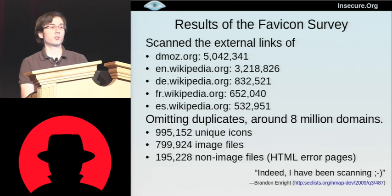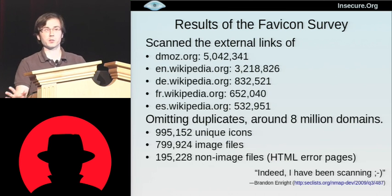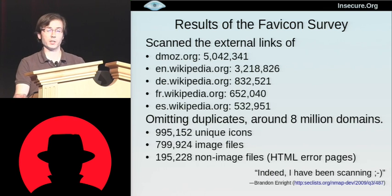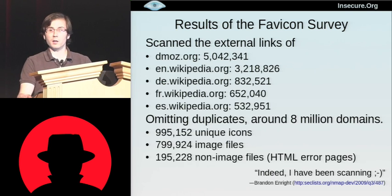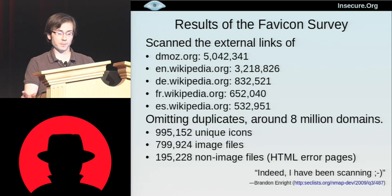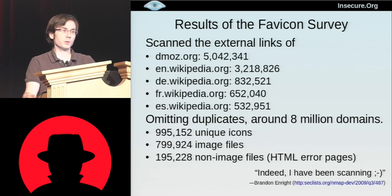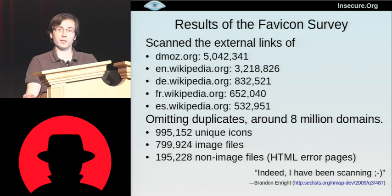We did all our results. We looked at the top 50 or so icons, went and verified them manually, and built a database. That's what you get if you download Nmap now — a database of the top icons from this huge survey. But it's sort of disappointing to do days of scanning, get gigs and gigs of data, and end up with a 50-line data file.